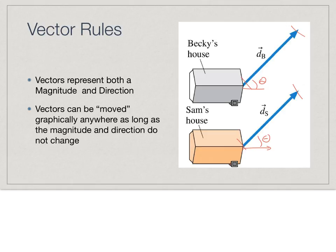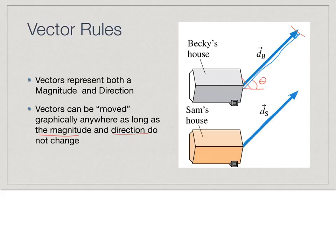One way to compare vectors is to move a vector around. As long as I keep the magnitude — the length — and direction — the angle — the same, I can move any vector. So I could take this vector and move it right next to Becky's vector, keeping the same magnitude and direction. You can then see that they are the same vector.